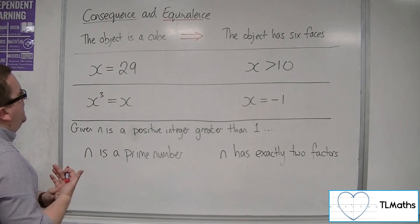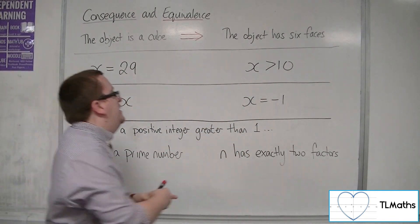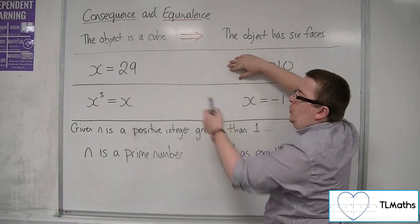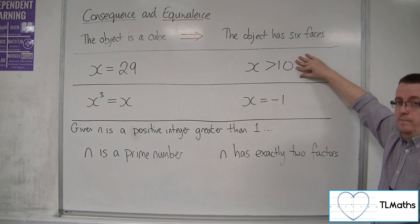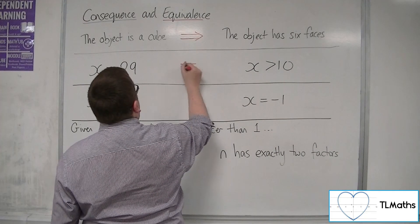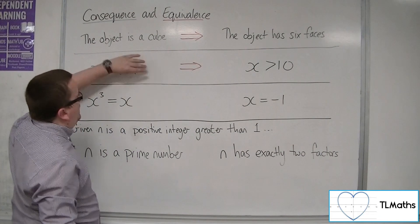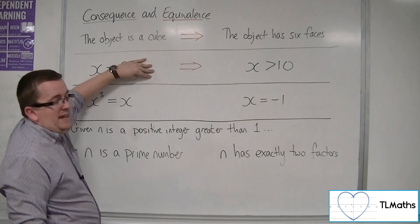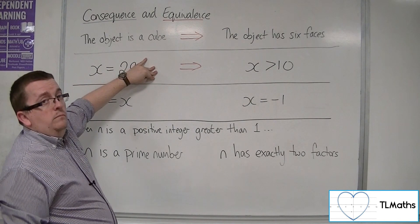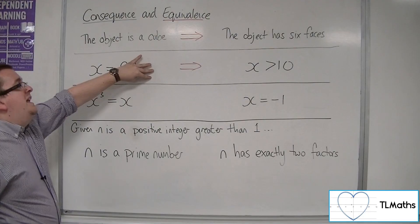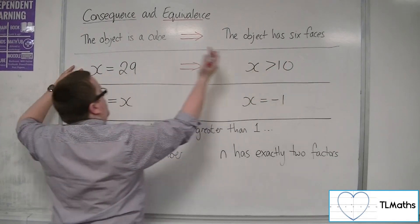Example two: 'X equals 29' and 'X is greater than 10.' If X is equal to 29, then clearly X is greater than 10, so the arrow definitely points from left to right. But if we just look at X is greater than 10, then X could be any number greater than 10 — 10.5, 11, 100. That doesn't necessarily mean X has to be 29. So it works left to right, but not right to left.